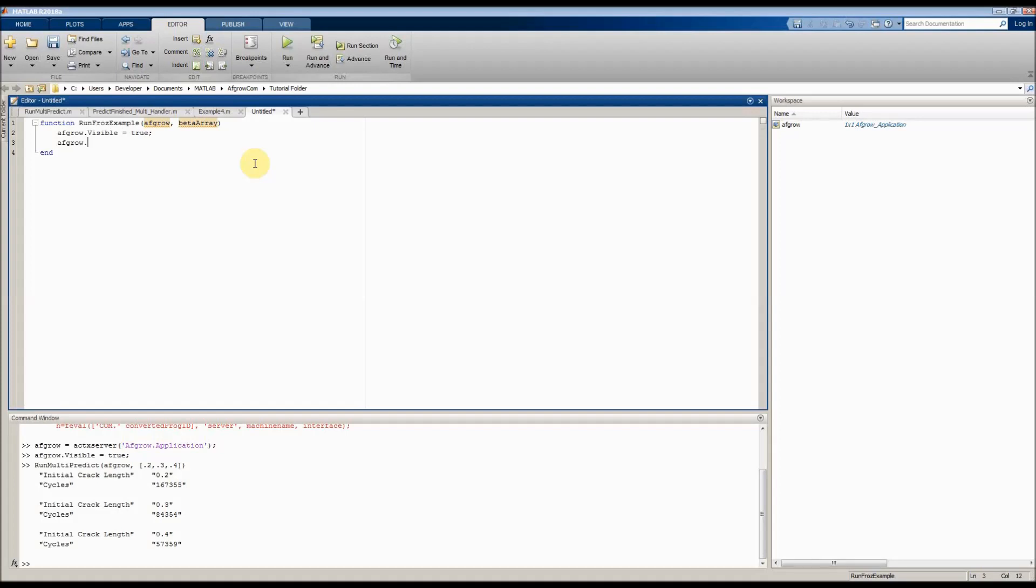The first thing we're going to do is make sure AFGRO is set to visible. And then AFGRO.Units, and make sure that we're in the correct units. Next we need to make sure that our spectrum is set to constAmplitudeSpectrum. So we can say AFGRO.const, and then it'll finish it for us if we have an AFGRO object instantiated. Then we'll set the SMF to 14 for this example. Next, we need to set the crack length. So we'll say AFGRO.crackLengthC is equal to 0.2.